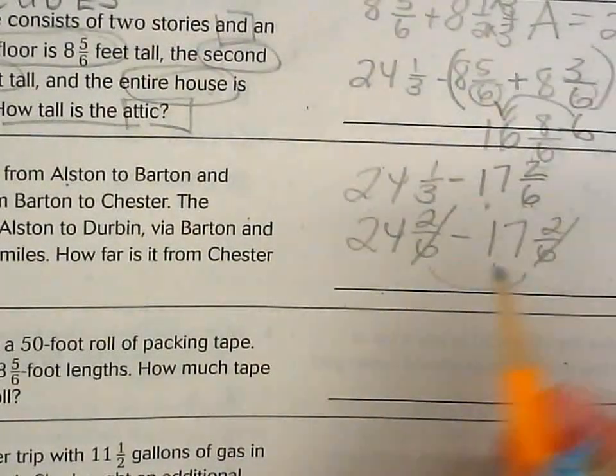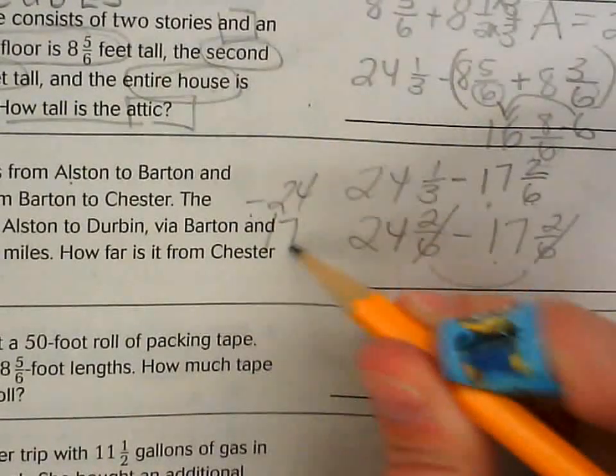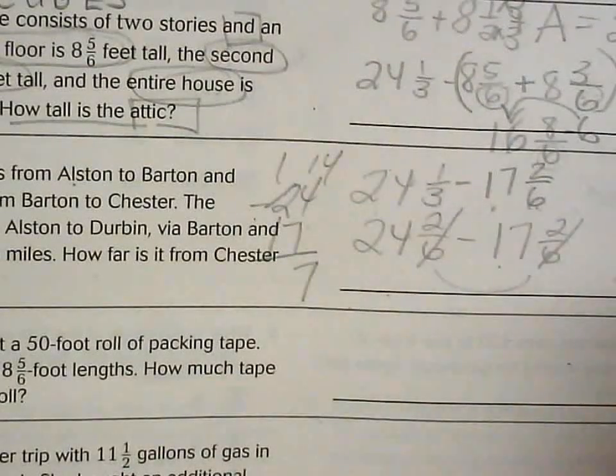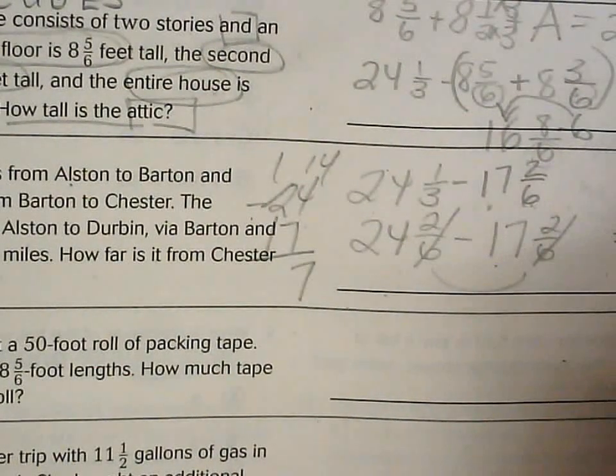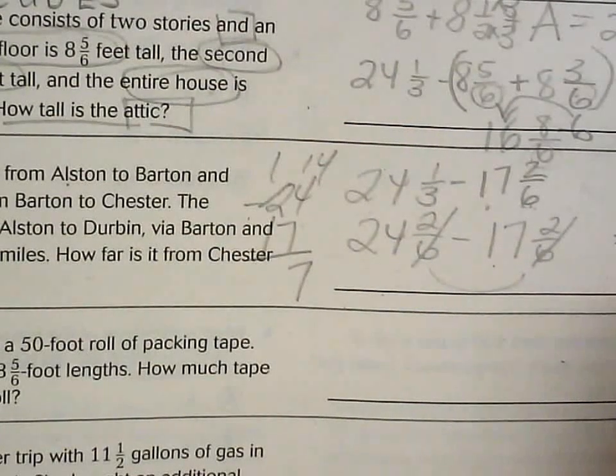If I can't do it this way, I can rewrite it going up and down. So 24 minus 17, and I'll borrow: 14 minus 7. So my answer for the attic is seven feet tall.